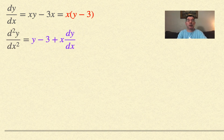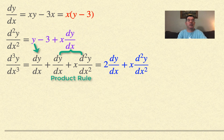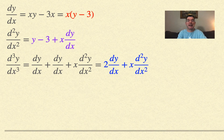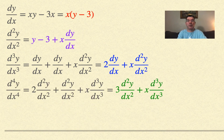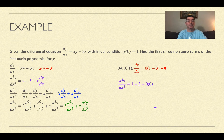The derivative of x times (y minus 3) requires the product rule. So the second derivative will be (y minus 3) plus x times dy/dx. The third derivative is going to be dy/dx plus dy/dx plus x times d²y/dx², which simplifies to 2 times dy/dx plus x times d²y/dx². Now at the point (0, 1), plugging in x equals zero and y equals one into dy/dx gives zero. Then d²y/dx² at x equals zero and y equals one is negative two.